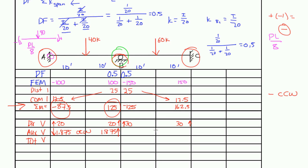For span BC, we sum the moments: 125 plus 162.5, divide by the length of 20, which gives us 1.875. We write 1.875 on both sides of the span. To get the direction, we add negative 125 and 162.5, which gives a positive value. We switch the sign to get a negative — counterclockwise — so on the right side we're going up and on the left side we're going down.